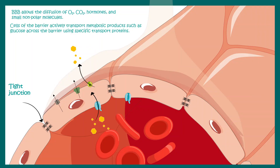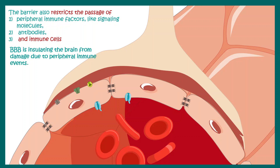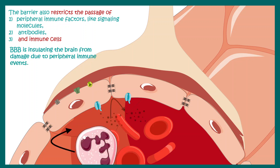Now let us try to understand how the blood-brain barrier is important for our brain. The blood-brain barrier restricts the passage of several immune cells, antibodies, and many other immune factors such as cytokines, thereby preventing our brain from the harmful effects of immune activation. So one can understand that the brain is kind of immune privileged.